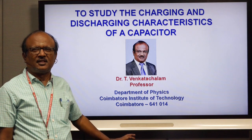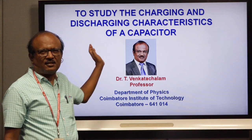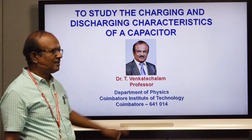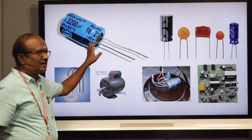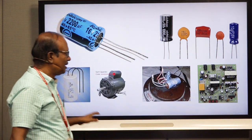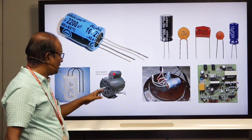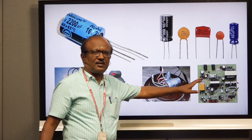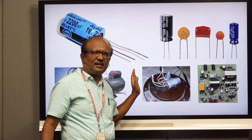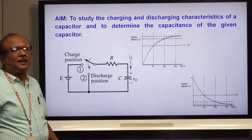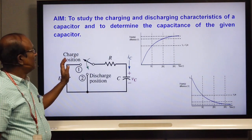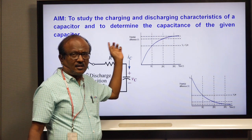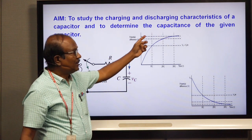Welcome to this experiment to study the charging and discharging characteristics of a capacitor. The aim of this experiment is to measure the capacitance of a capacitor. Capacitors come in different types and are used in a variety of applications such as starting a motor fan and in electrical and electronic circuits. We are going to draw the charging and discharging characteristics curve and hence measure the capacitance.